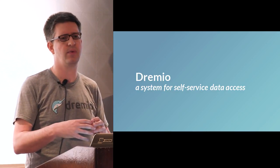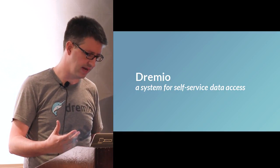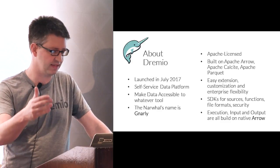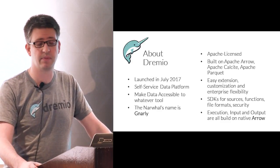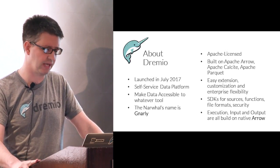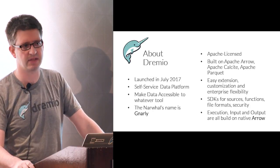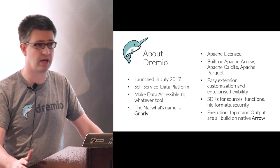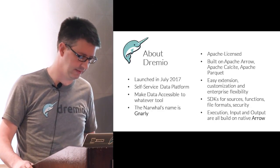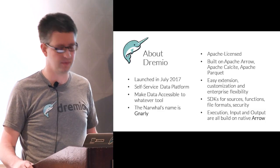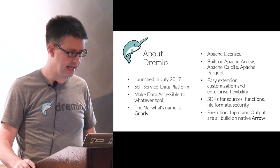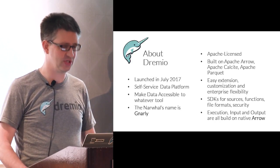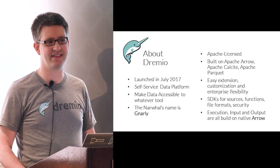Arrow is the base — how do we deal with data in a more common way? On top of that, Dremio asks: how do we make it easier to get access to data? Dremio is an Apache-licensed project built on Apache Arrow, Apache Calcite, and Apache Parquet. We launched the product last July — it's fairly new. We call it a self-service data access platform. Our logo, the Narwhal, is named Gnarly.